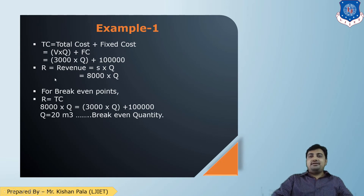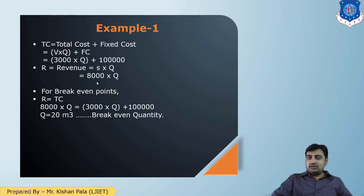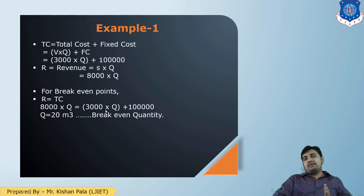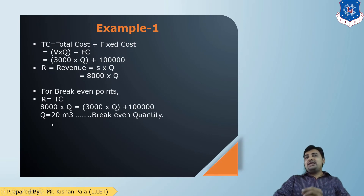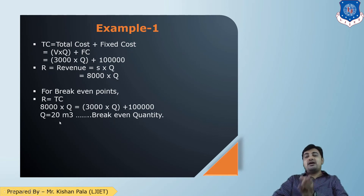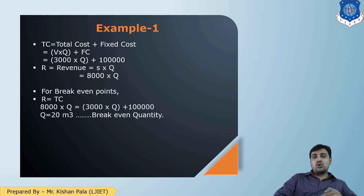Total cost TC = V × Q + FC = 3,000 × Q + 1,00,000. Revenue R = S × Q = 8,000 × Q. At the Break-Even point, R = TC: 8,000 × Q = 3,000 × Q + 1,00,000. From this relation, we can find the break-even quantity = 20 cubic meters. Greater than 20 cubic meters, the firm will be profitable; below this quantity, the firm will be in loss.